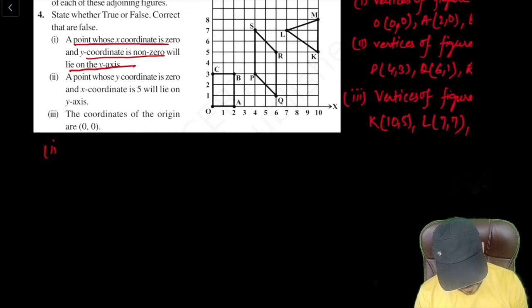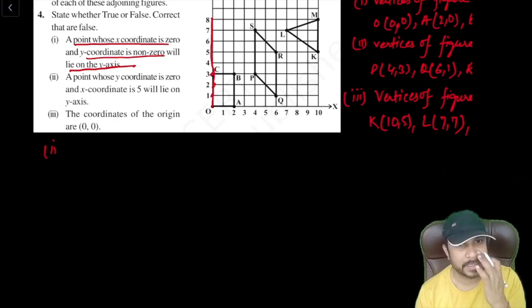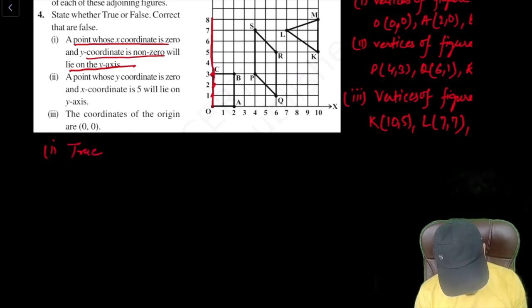So first point, let's go to the first point. A point where X coordinate is zero and Y coordinate is non-zero will lie on X axis. So a point where X axis is zero is always on Y axis. There is no travel on the X axis side. And Y coordinate is not zero like one, two, three or something like that will lie on Y axis. It is a true point. Yes, it will lie on Y axis.